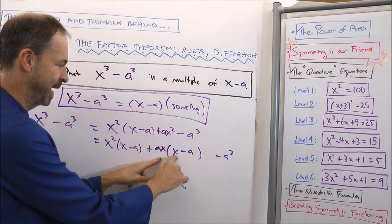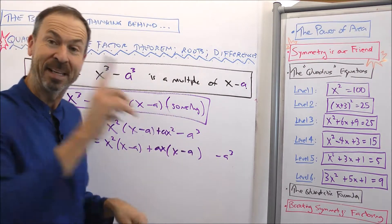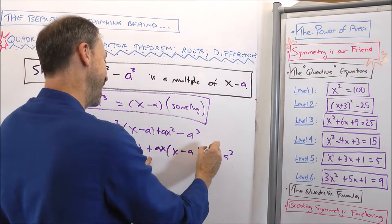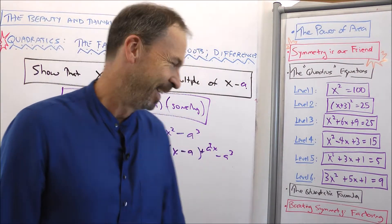So let's make it a multiple of x minus a. There it is. ax times x is ax², but I've introduced negative a²x. So I better counteract that by adding an a²x.